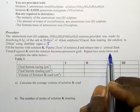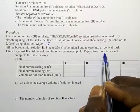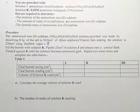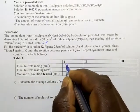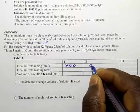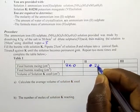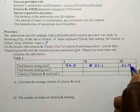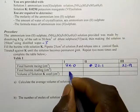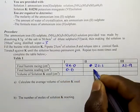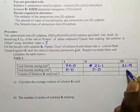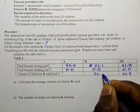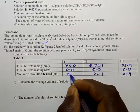Titrate J against K until the solution becomes permanently pink. Repeat two more titration times and complete the table below. The table values are: 22.1, 21.9, with initial readings of 0.0, 0.0, 0.0, giving titre readings of 21.9, 22.1, and 22.0.